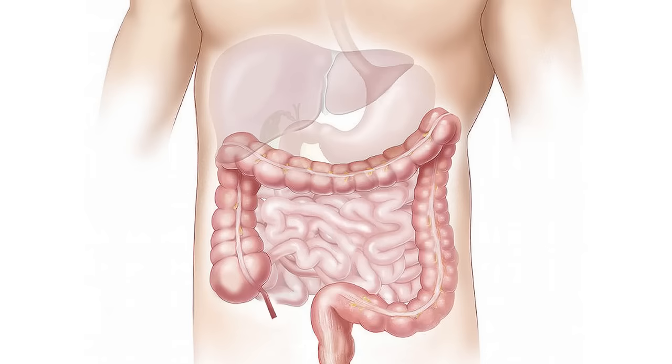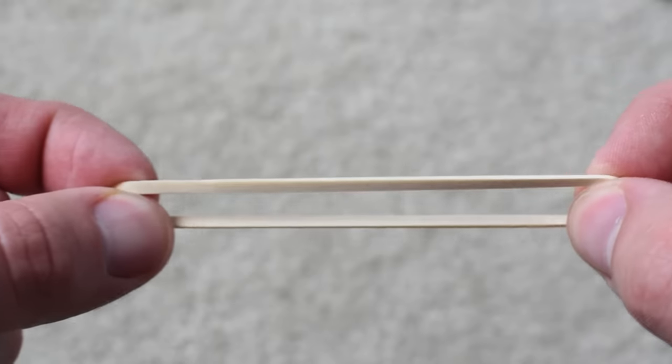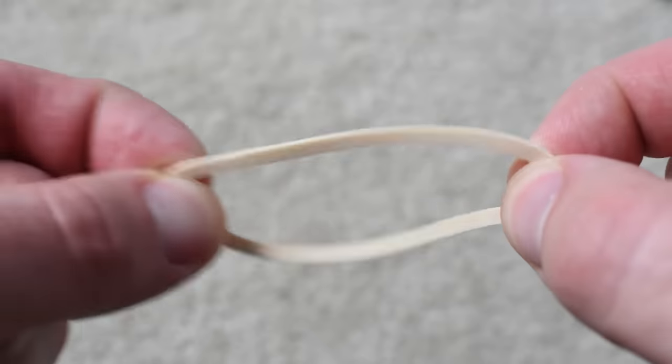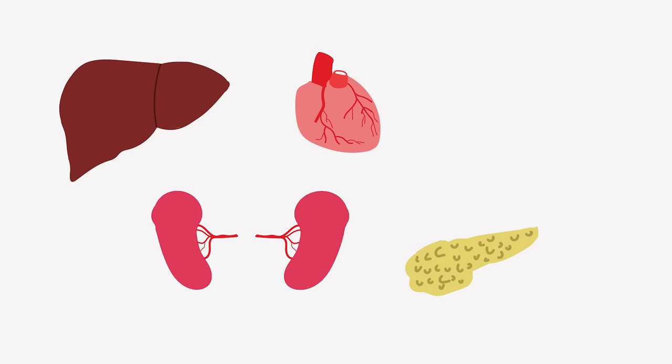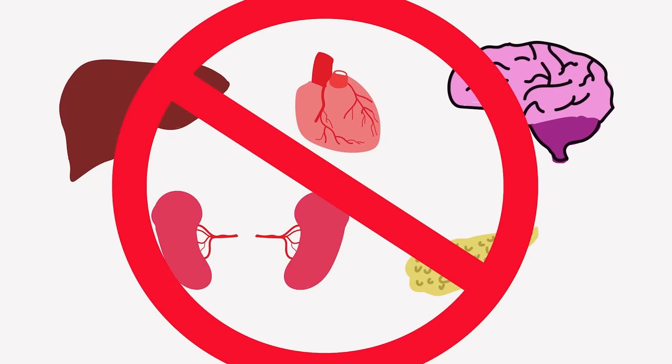In contrast, elastic organs such as your intestines, stomach, and bladder receive less damage from gunshots. The energy from the pressure wave is dissipated because the tissue stretches. However, solid, inelastic organs like your liver, pancreas, kidneys, heart, and brain receive full damage from the pressure wave because the tissue does not stretch.